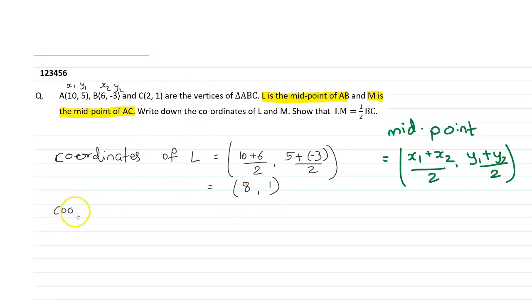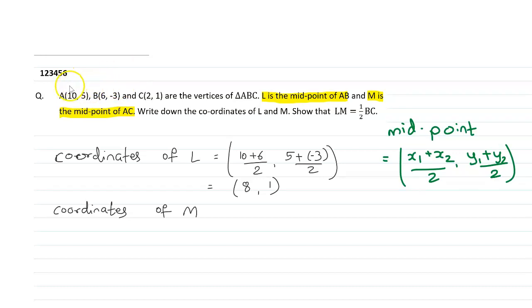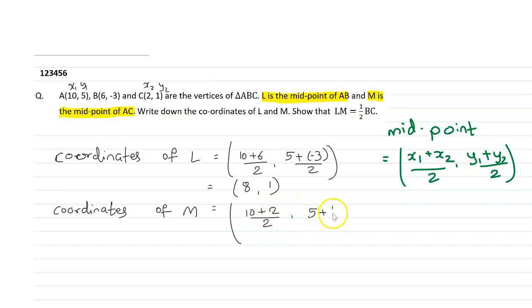Similarly, for the coordinates of point M, which is the midpoint of AC, A will be X1,Y1 and C will be X2,Y2. So the coordinates are (10 plus 2)/2 comma (5 plus 1)/2. That gives 12/2 = 6, and 6/2 = 3. So the coordinates of point M are (6, 3).